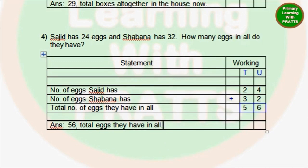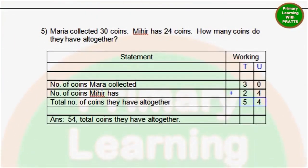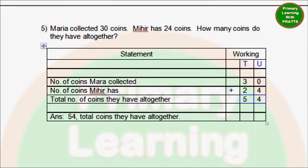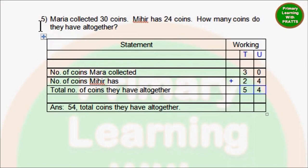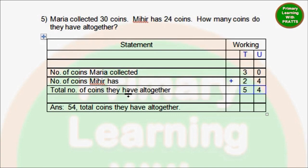Our next sum — the fifth one: Maria collected 30 coins. Mihin has 24 coins. How many coins do we have altogether? Number of coins Maria collected — 30. Number of coins Mihin has — 24. Total number of coins we have altogether. We put our plus sign in blue. 0 plus 4 is 4, 3 plus 2 is 5. The answer is 54 — total coins we have altogether.